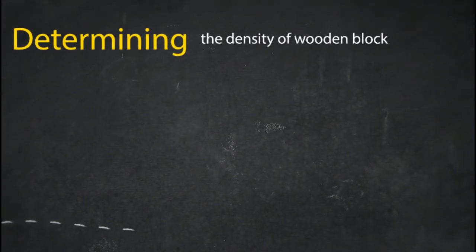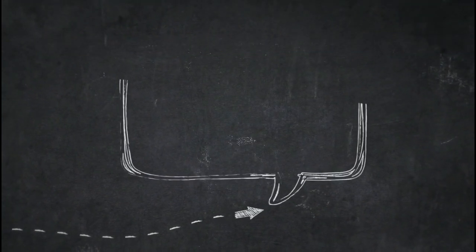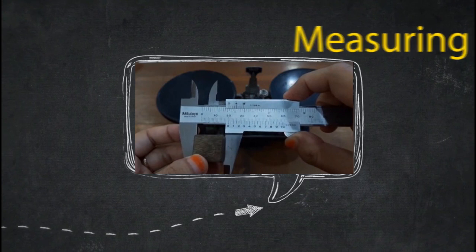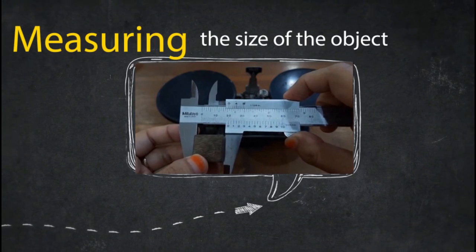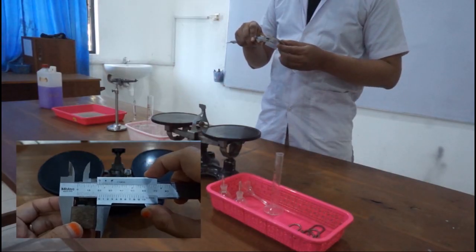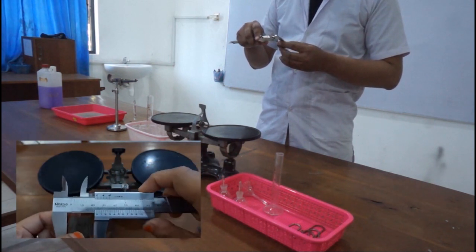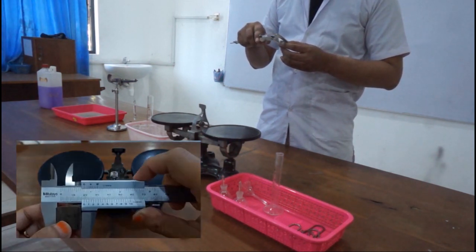First of all, you're going to determine the density of the wooden block in a very precise cube shape. You need to measure the width, the length, and the height of the object.